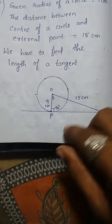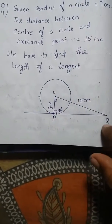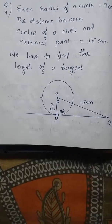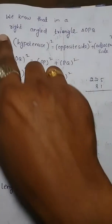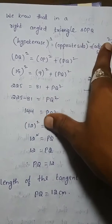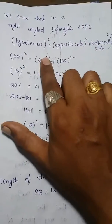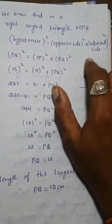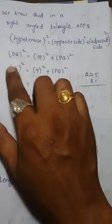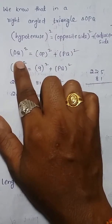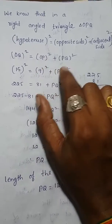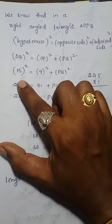In a right angle triangle OPQ, by the Pythagorean theorem: hypotenuse squared equals opposite side squared plus adjacent side squared. Here the hypotenuse is OQ, so OQ squared equals OP squared plus PQ squared.